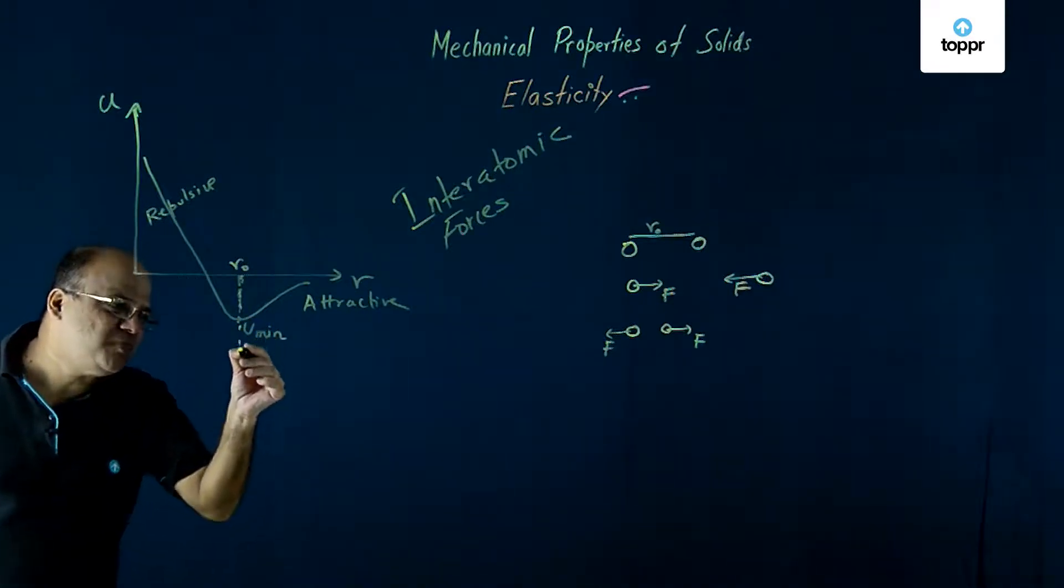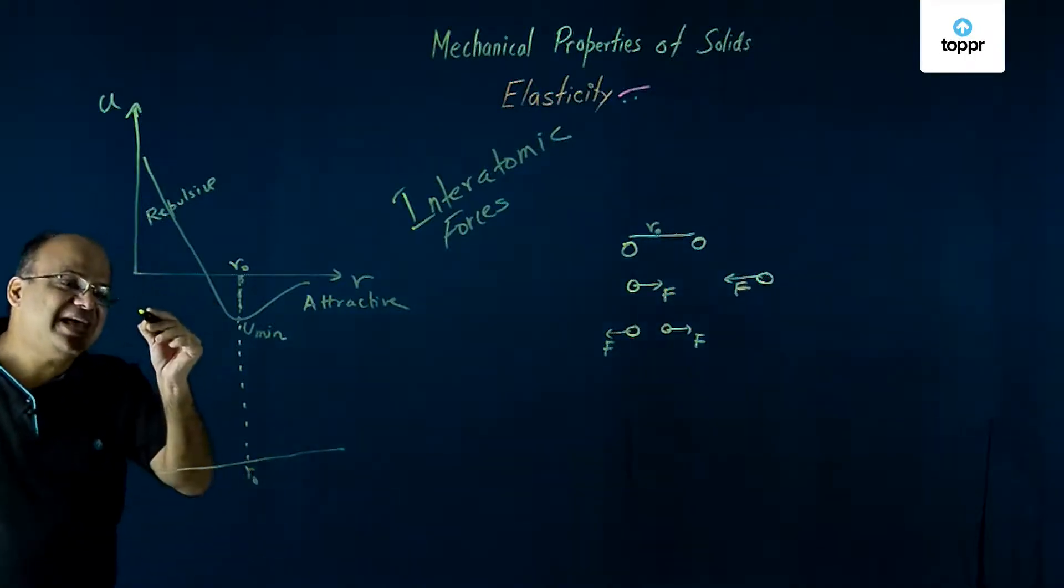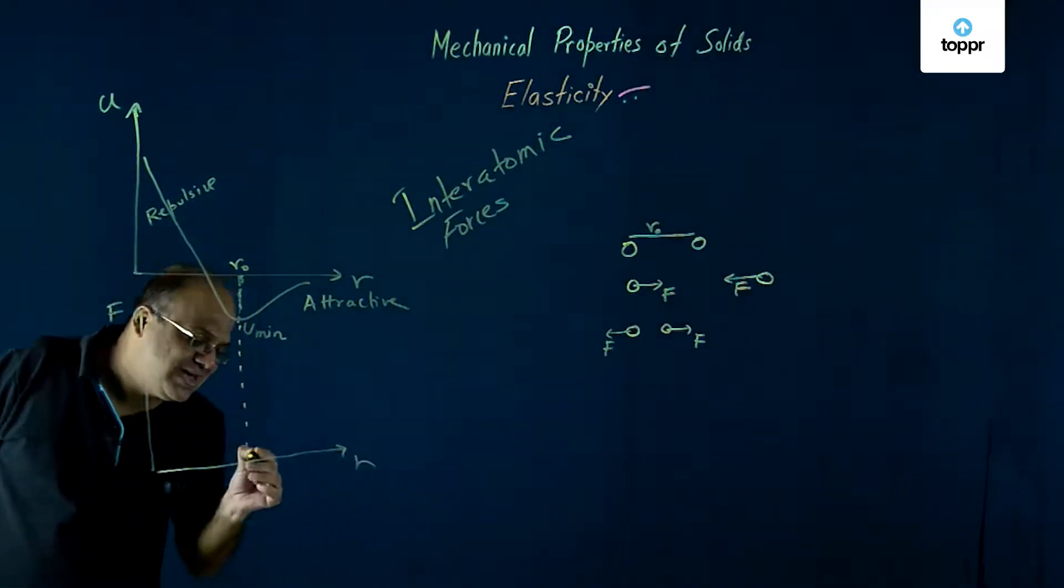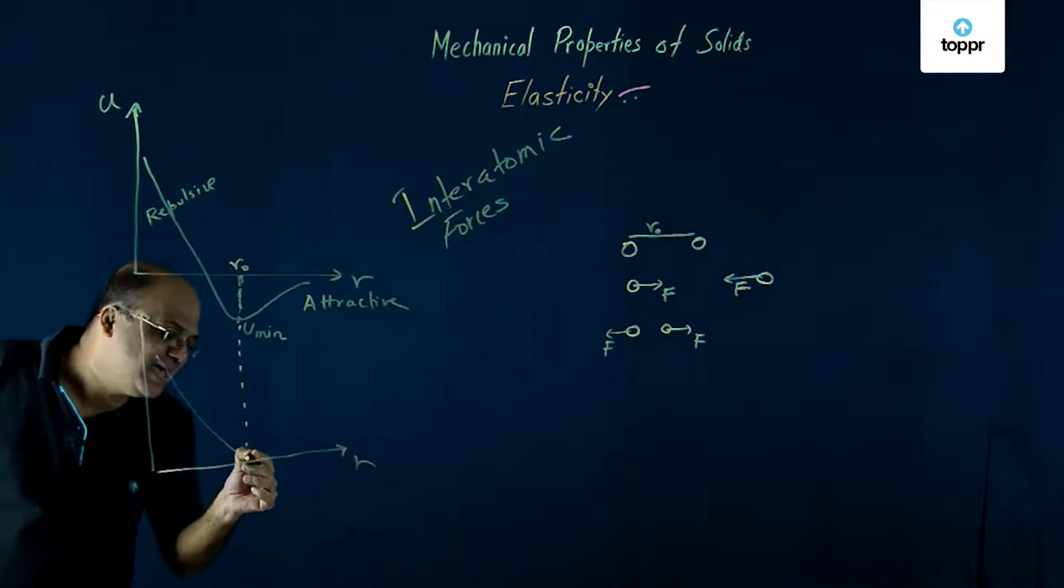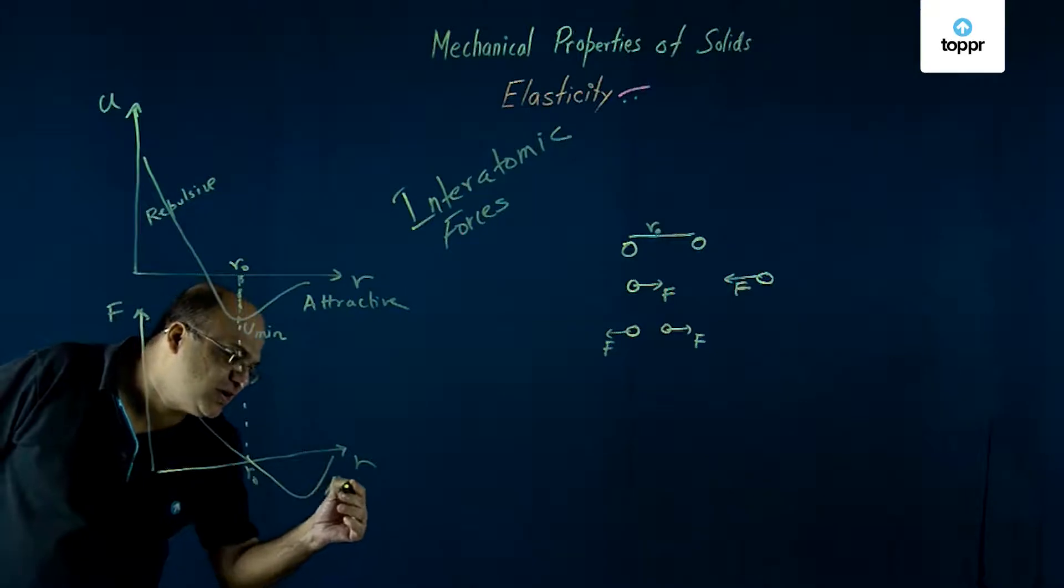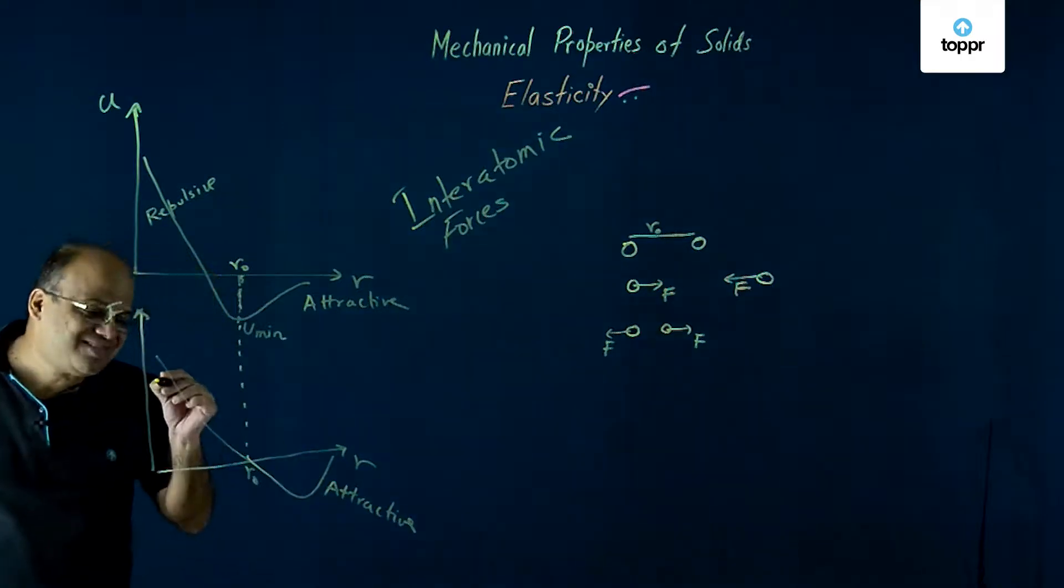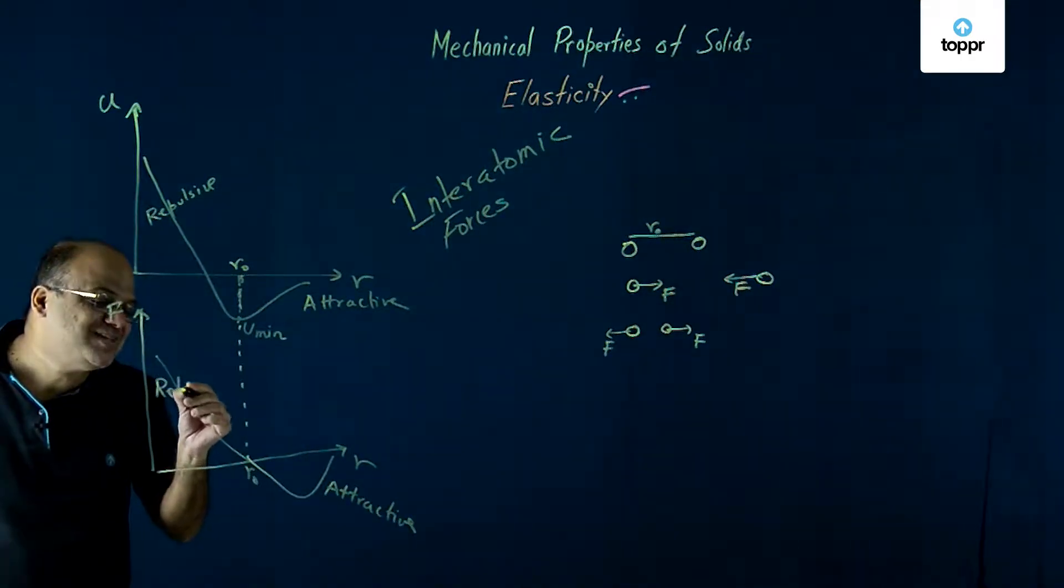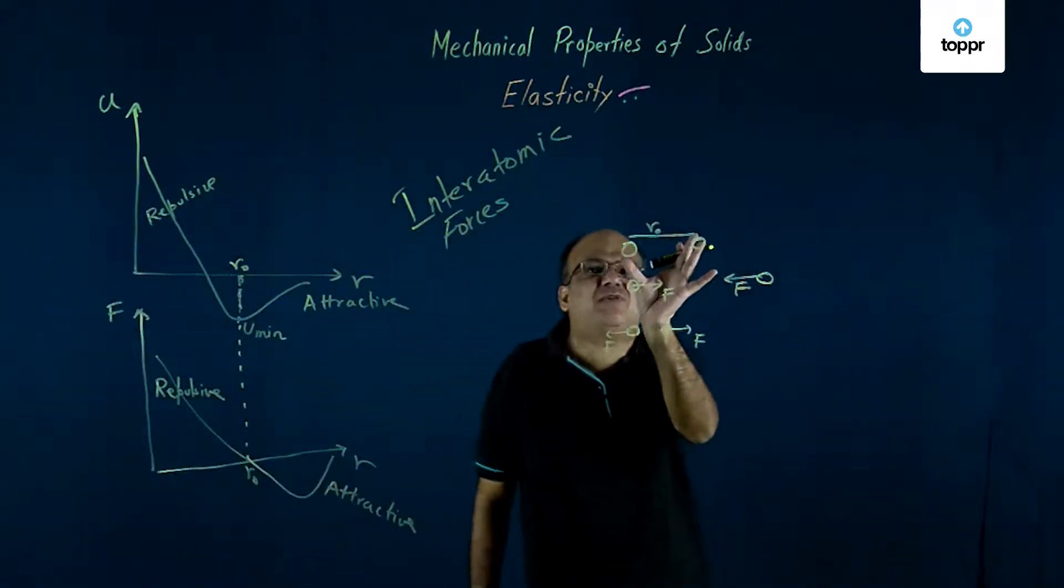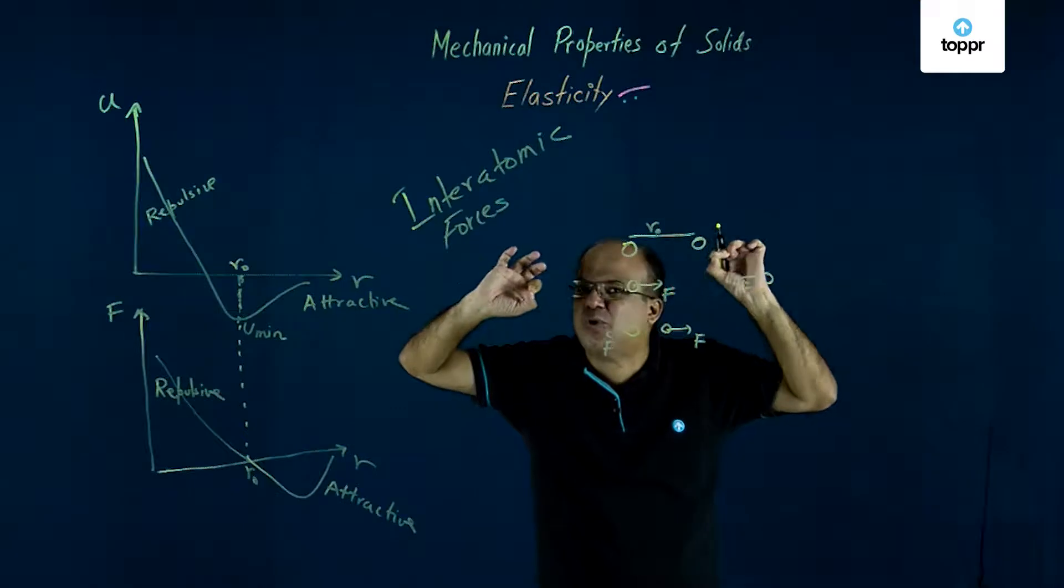If you look at the interatomic forces at this equilibrium separation, the interatomic force is zero. Here the force becomes zero and when the separation is more than R0 the interatomic force is attractive. When the separation is less than R0 the interatomic force is repulsive. And that is why the atoms always want to occupy positions corresponding to R equal to R0.